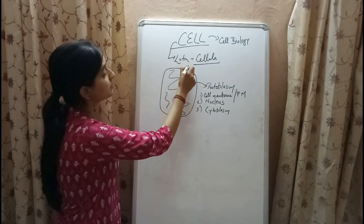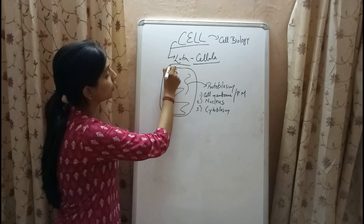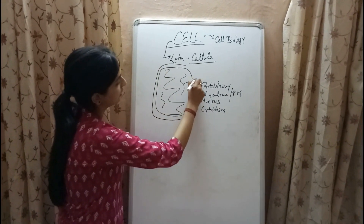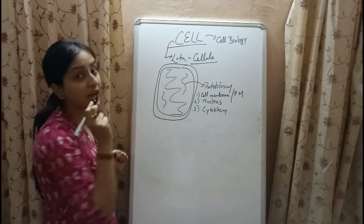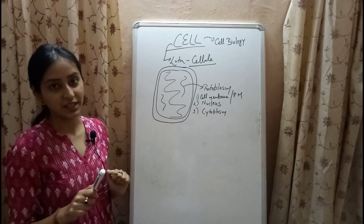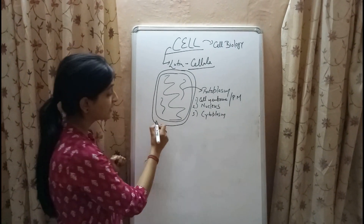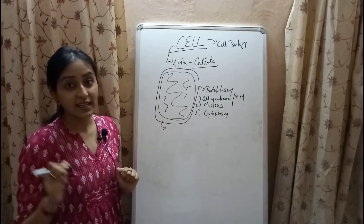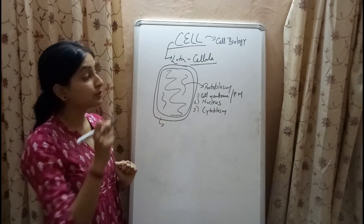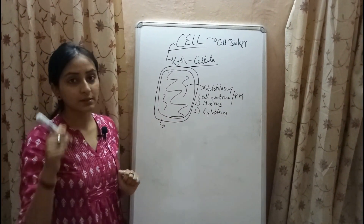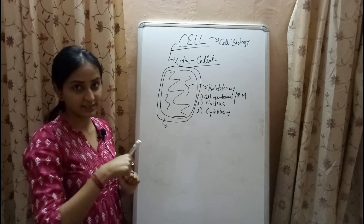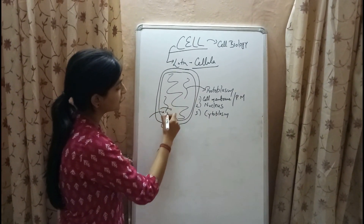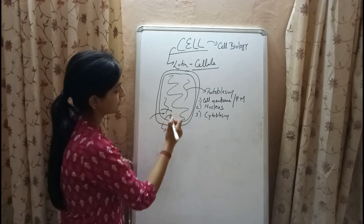Cell membrane is the outermost protective covering of the cell. It is highly flexible in nature and it is semi-permeable, which means it does not allow the entry of all substances inside the cell — rather it is only permeable to certain substances.